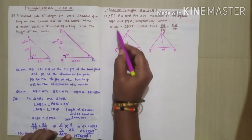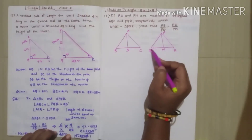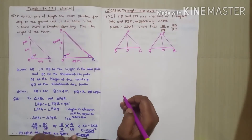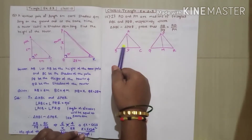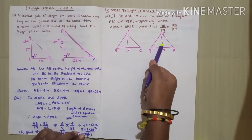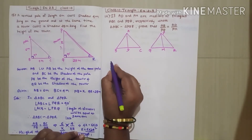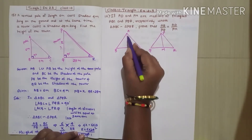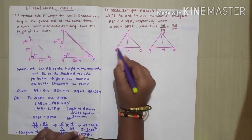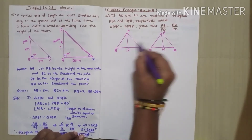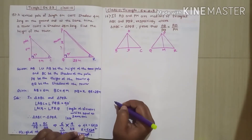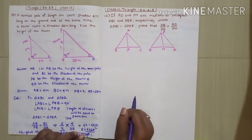They are saying triangle ABC is similar to triangle PQR. If these two triangles are similar, we know that all three angles are equal and all sides are proportional. We have to prove AB/PQ = AD/PM.